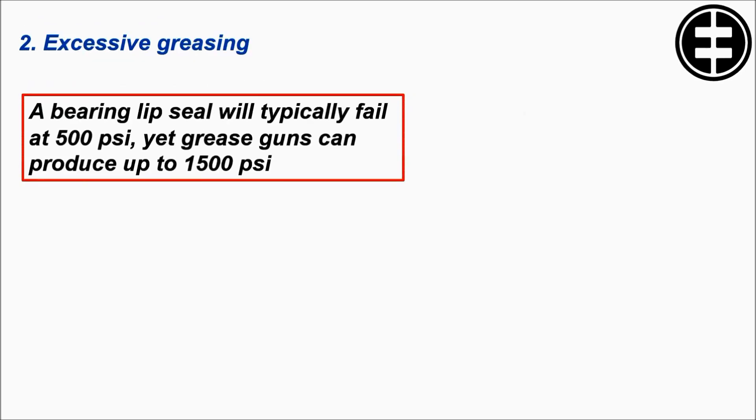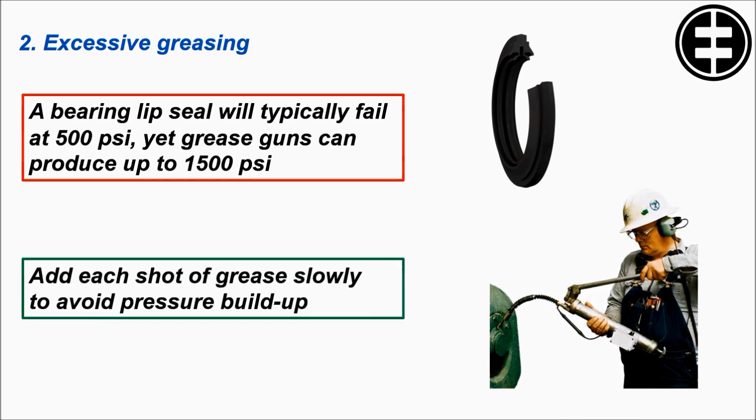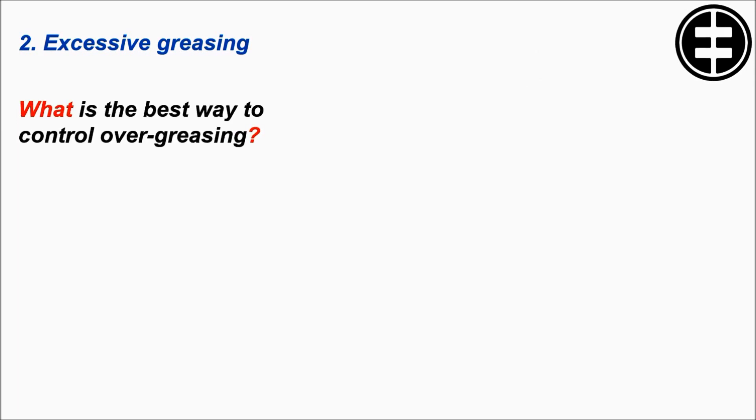A bearing lip seal will typically fail at 500 psi, yet grease guns can produce up to 1500 psi. Add each shot of grease slowly to avoid pressure build-up.